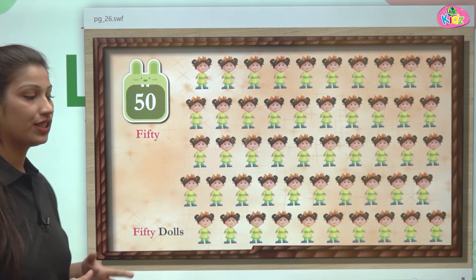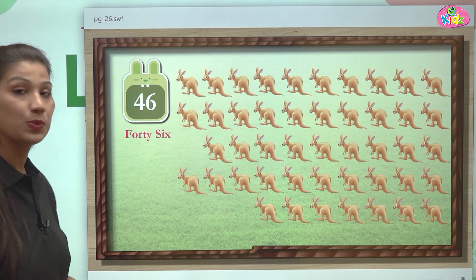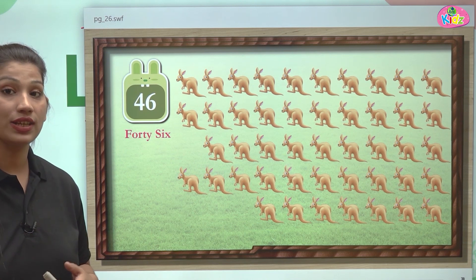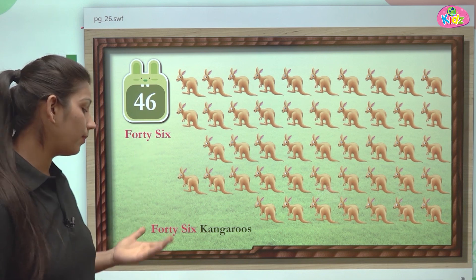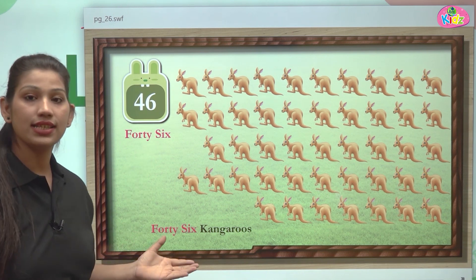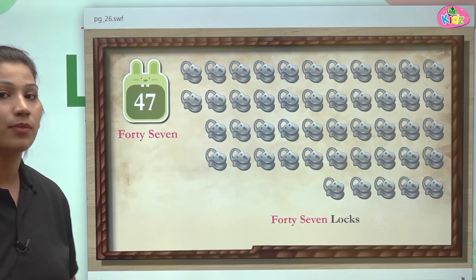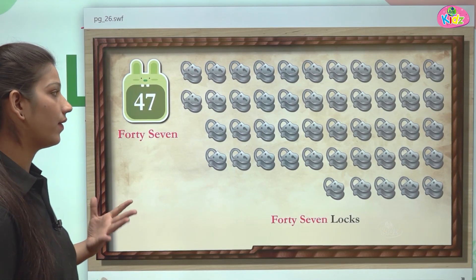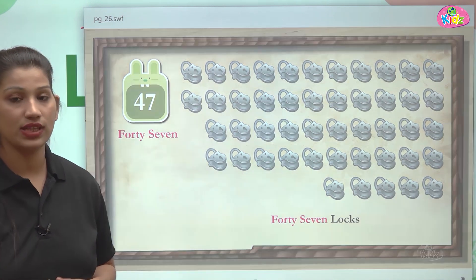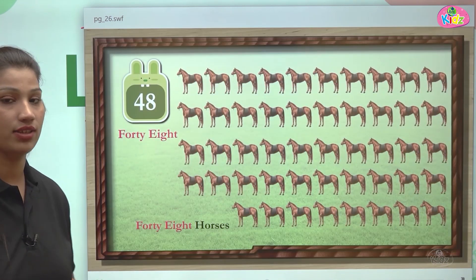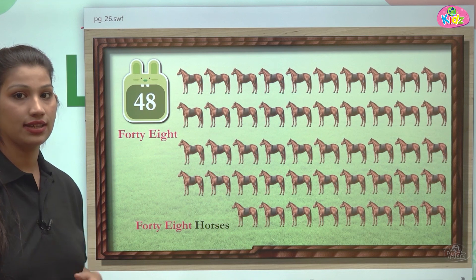Let us quickly revise all of the numbers we learnt in today's session. This is the number 46 — 4-6. After 46, there comes number 47 — 4-7. Four at tens place, seven at ones place, 47. After 47, 48 — four and eight is 48.